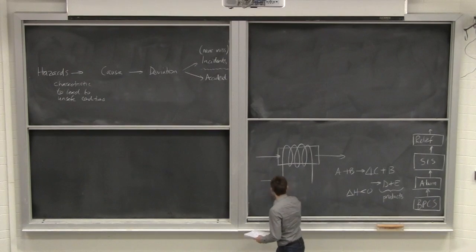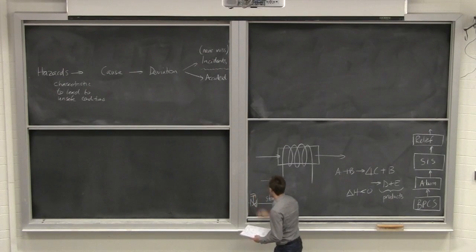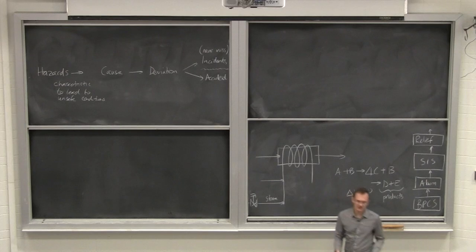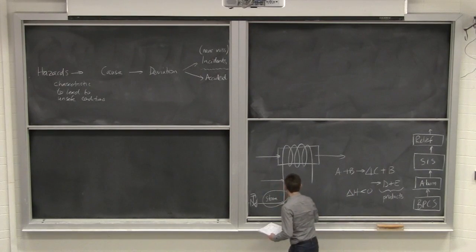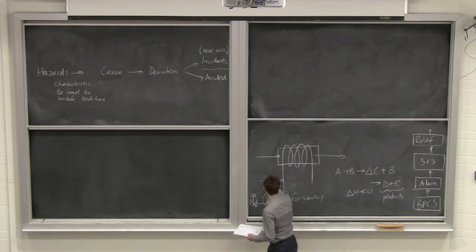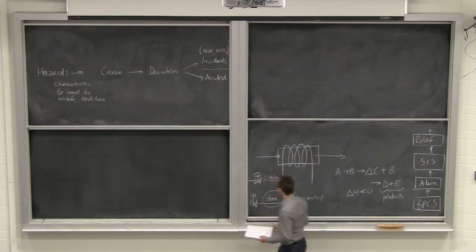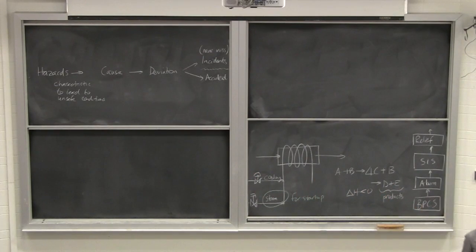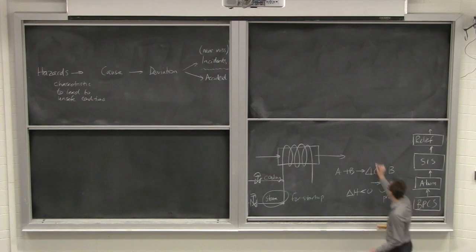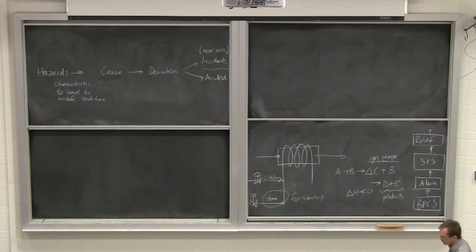And then that C intermediate gets reacted with more B and goes to D plus E. So these are the products. And it's exothermic. So all of that is exothermic. I'm just setting up this case study to talk about those terms up there on the left. Now, to get the reactor started, we'll have typically steam over here. And that's just to get going. So this is just for startup.